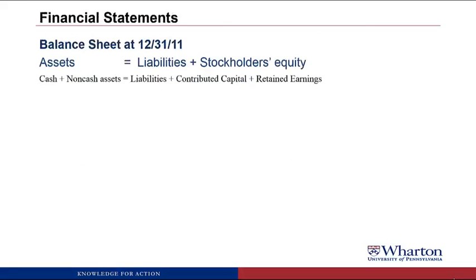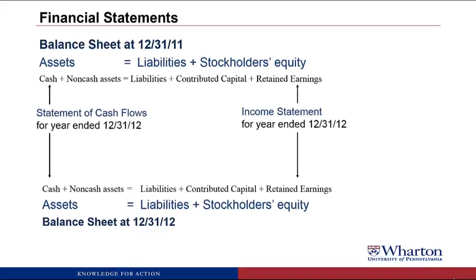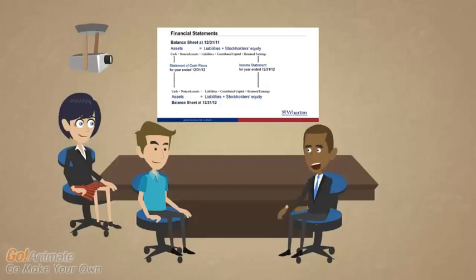Let's say we have a balance sheet at the end of December 2011: assets equals liabilities plus stockholders' equity. We can split assets into cash and non-cash assets, and stockholders' equity into contributed capital and retained earnings. Then you have a balance sheet at the end of December 2012 — balance sheets are point in time. The income statement gives you the change in retained earnings due to business activities over the year. The statement of cash flows gives you the change in cash over the year. Why the difference between income and cash?